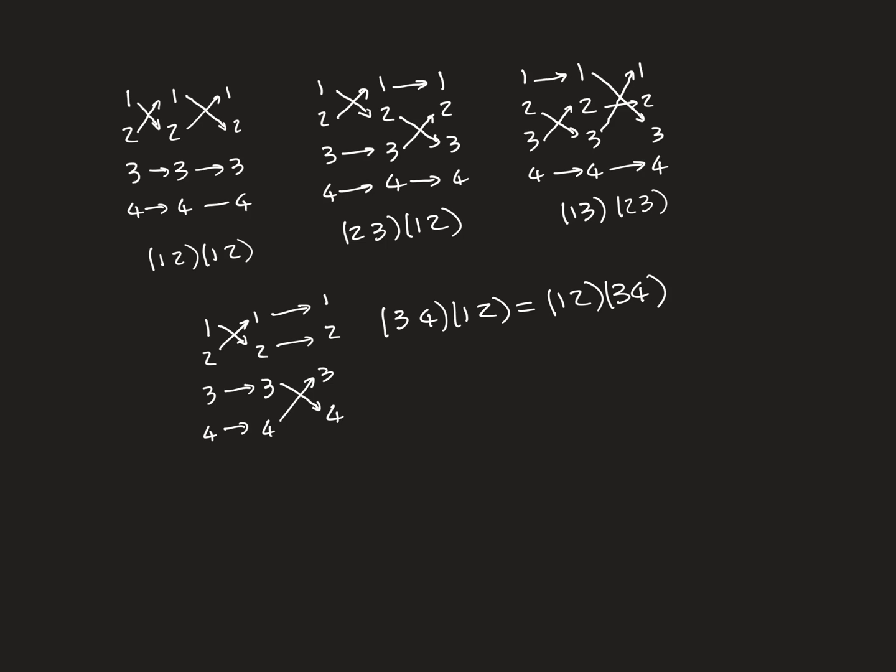To prove the identity is always even, we need to understand something about the composition of two transpositions. When two transpositions are composed together, there are three options.